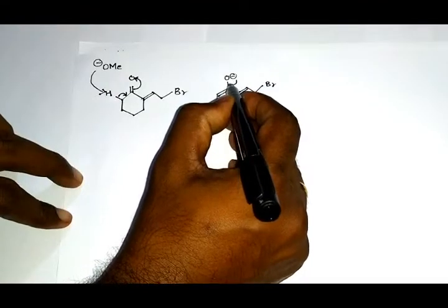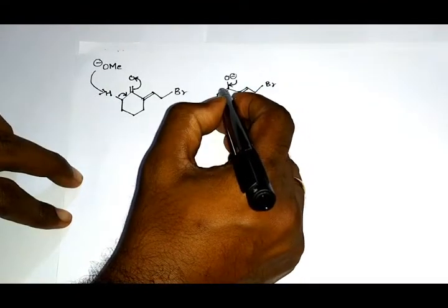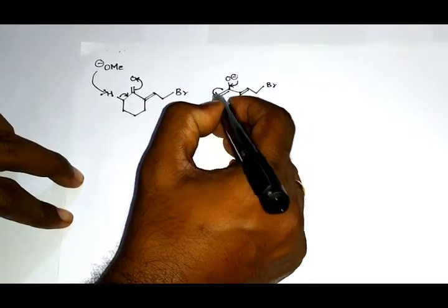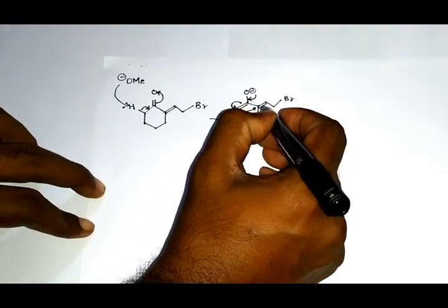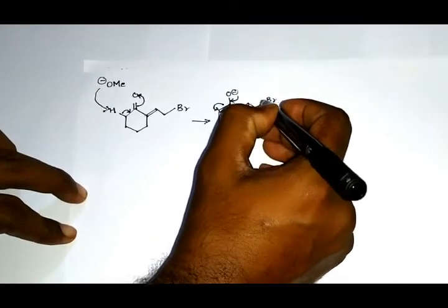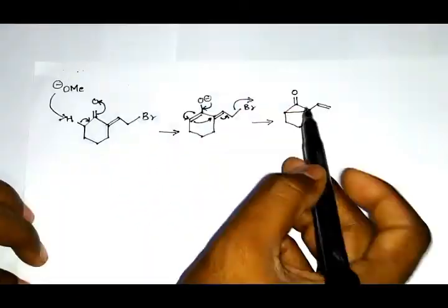This lone pair of electrons will fall here, this double bond will fall here, and the lone pair of electrons from this part will fall here. This double bond will come here and this bromine will leave, leading to the formation of this structure.